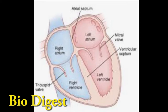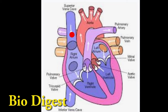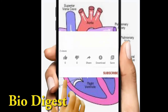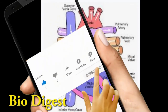Blood vessels entering the heart: anterior vena cava or superior vena cava brings deoxygenated blood from the upper regions of the body including head, chest, and arms into the right atrium. Posterior or inferior vena cava brings blood from the lower regions of the body including abdomen into the right atrium. Blood vessels leaving the heart: the pulmonary artery arises from the right ventricle and carries deoxygenated blood to the lungs for oxygenation. The aorta arises from the left ventricle and carries oxygenated blood to all parts of the body. Please do subscribe to Biodigest, like and share. Thank you.